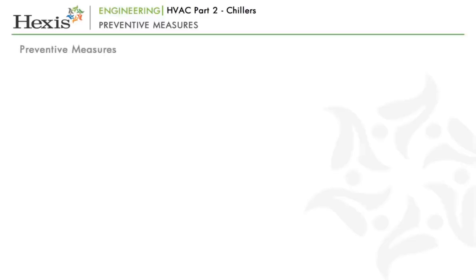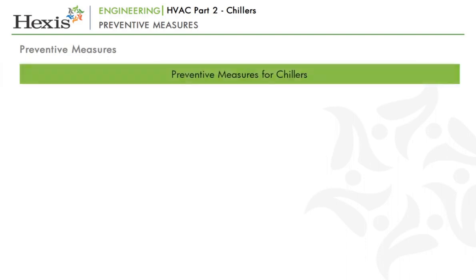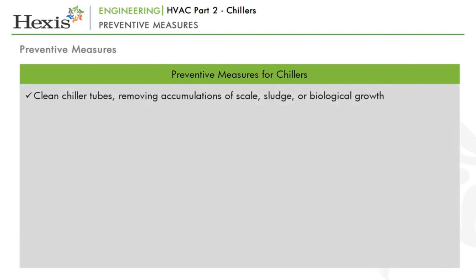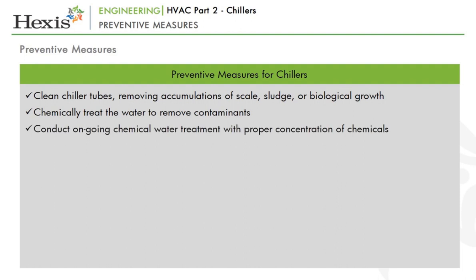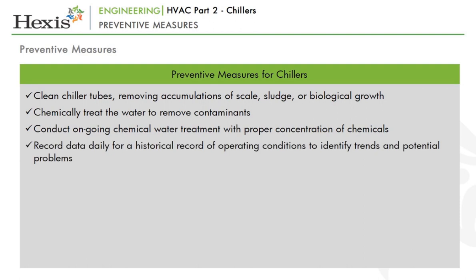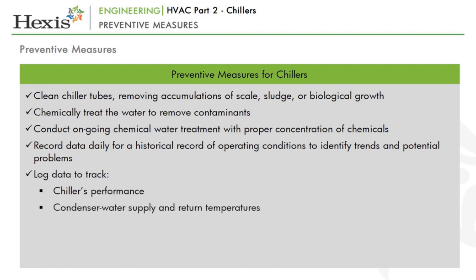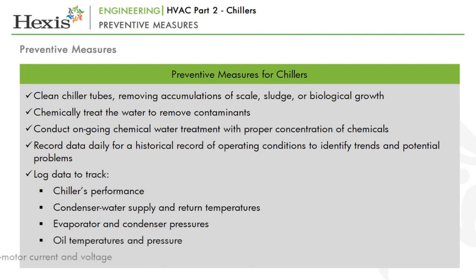Next, we will look at preventive measures for smooth functioning of chillers. Preventive measures include: cleaning chiller tubes to remove accumulations of scale, sludge or biological growth; chemically treating the water to remove contaminants and prevent accumulation on heat transfer surfaces; conducting ongoing chemical water treatment with proper concentration of chemicals; and recording data daily for a historical record of operating conditions to identify trends and potential problems. Data to track includes chiller performance, condenser water supply and return temperatures, evaporator and condenser pressures, oil temperatures and pressure, and drive motor current and voltage.